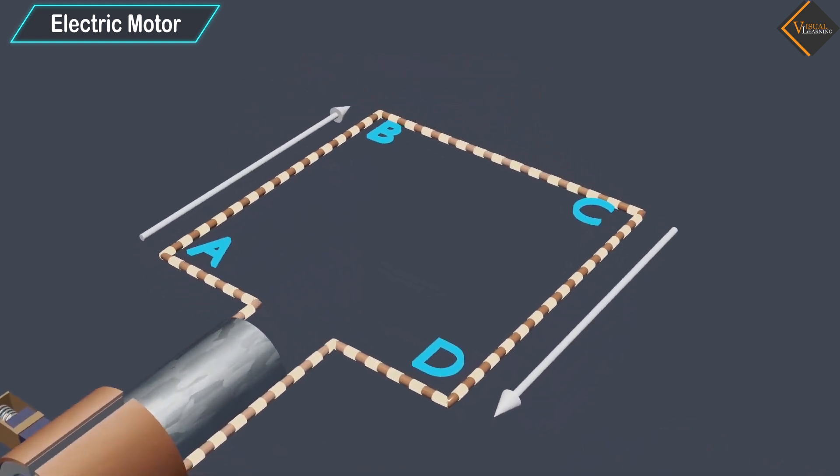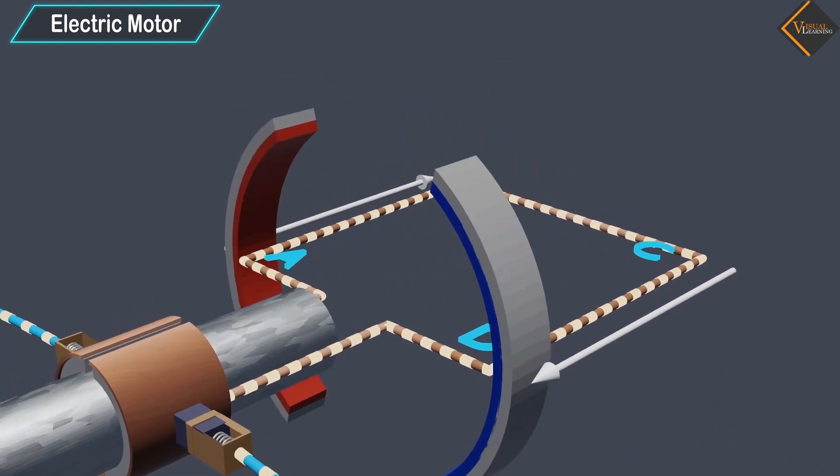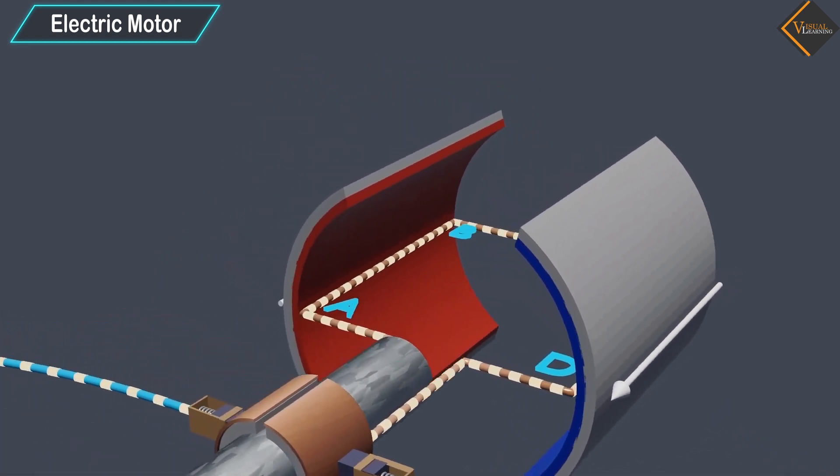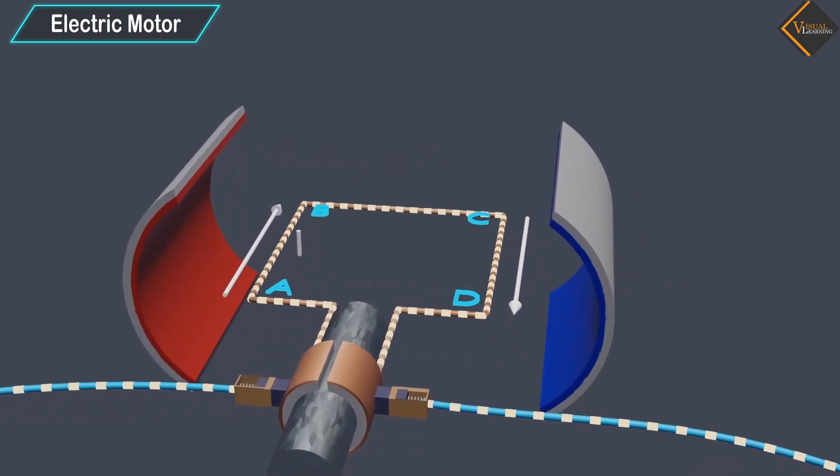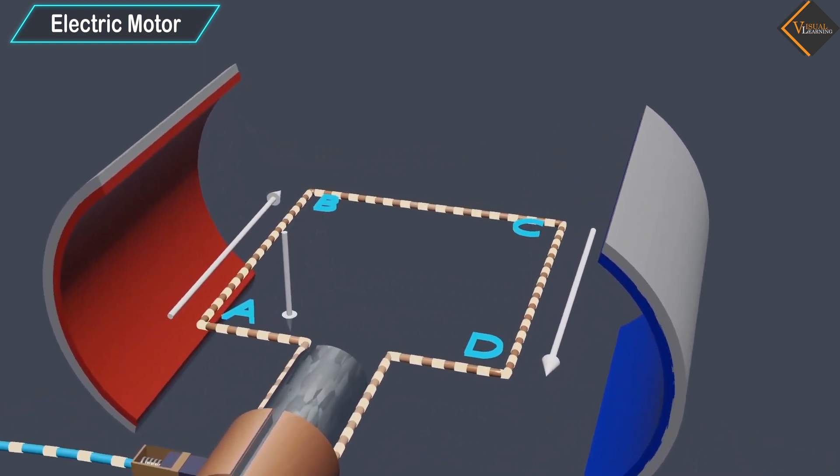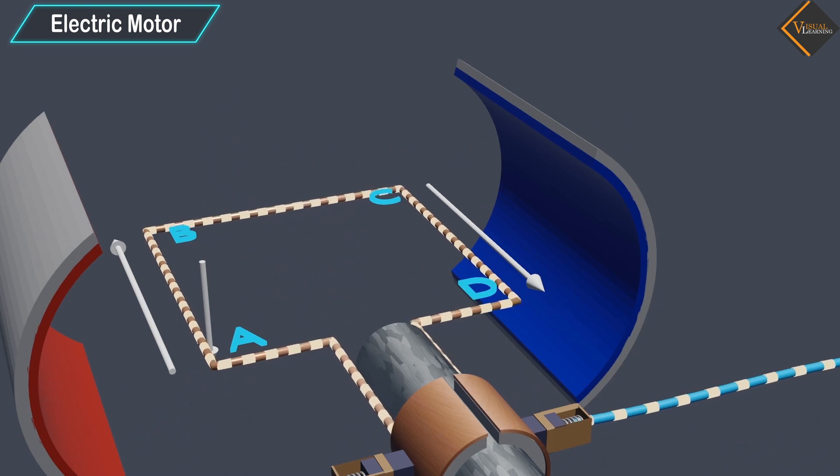On applying Fleming's left-hand rule for the direction of force on a current-carrying conductor in a magnetic field, we find that the force acting on arm AB pushes it downwards, while the force acting on arm CD pushes it upwards.